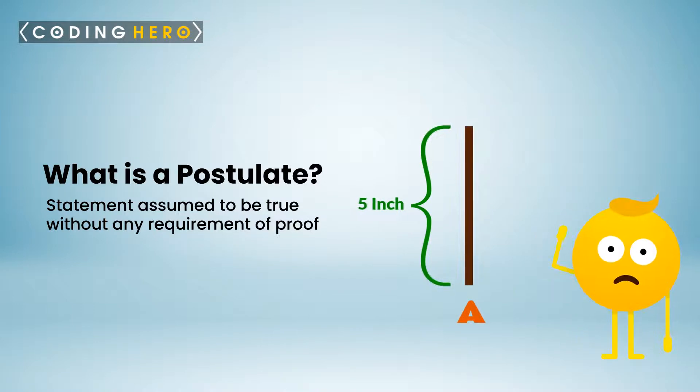For example, knowing that a stick A is 5 inches long and that a stick B is longer than stick A, one can create a postulate that states that stick B is at least 5 inches long.